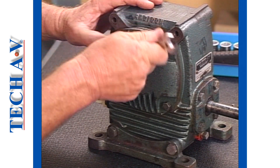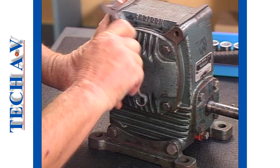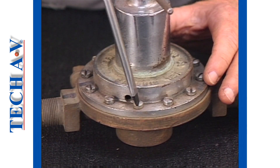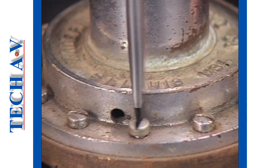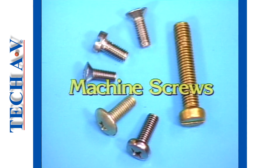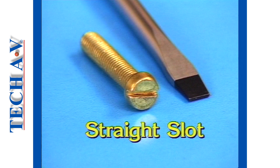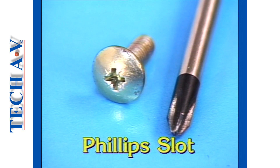The fasteners we have so far looked at all require the use of spanners for purposes of tightening or loosening. Smaller fasteners, which we call machine screws, are usually turned using screwdrivers. Machine screws are commonly used to secure light duty parts or components together and can be obtained in a variety of head shapes. Machine screws usually have either straight slotted heads, for regular flat bladed screwdrivers to fit and turn them, or Phillips slots, where the use of a Phillips screwdriver is necessary.